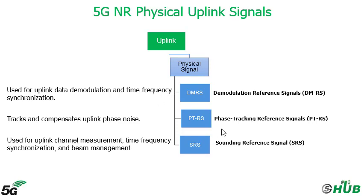The Phase Tracking Reference Signal is designed for compensation of phase noise in both downlink and uplink, enabling compensation for oscillator phase noise. This is especially useful in mmWave or high-frequency bands. The Sounding Reference Signal is used for uplink channel measurement, time-frequency synchronization, and beam management. It is designed for evaluation of uplink channel quality and timing, and is transmitted in the uplink to perform channel state information measurement, mainly for scheduling and link adaptation.